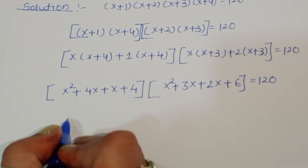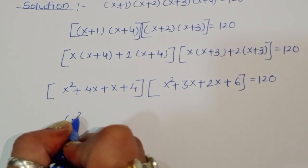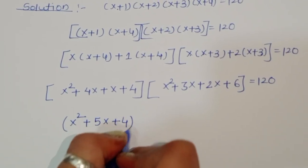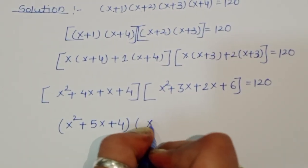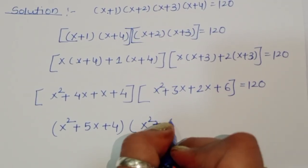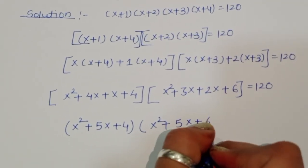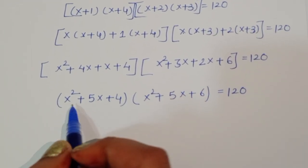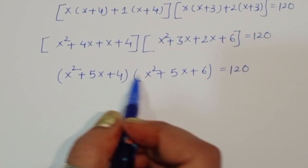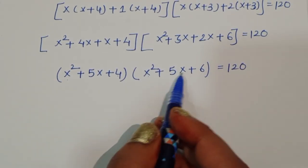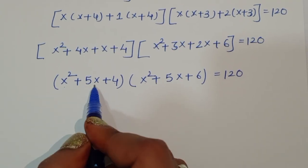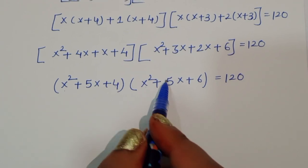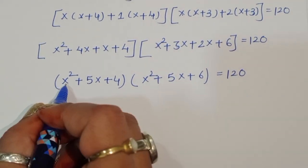Simplifying: x² + 5x + 4, times x² + 5x + 6, equals 120. Notice that x² + 5x is a common term in both brackets.